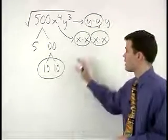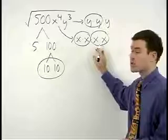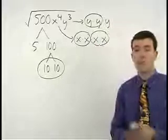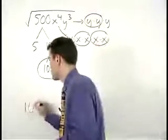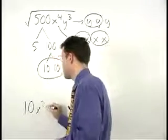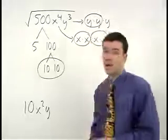So a 10, an x, another x, and a y can all come out of the radical. And we have 10x squared y on the outside. Notice that everything that comes out multiplies together.